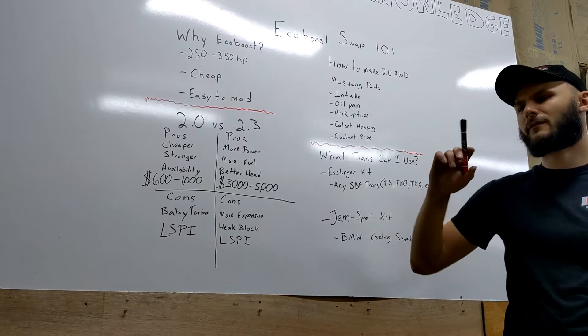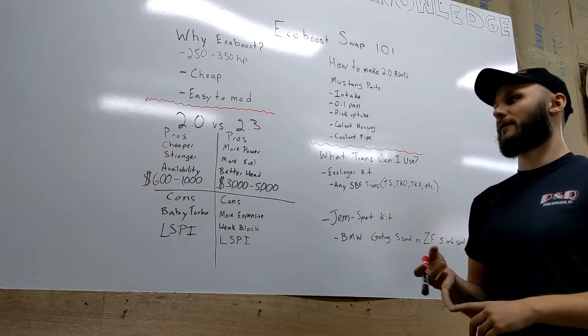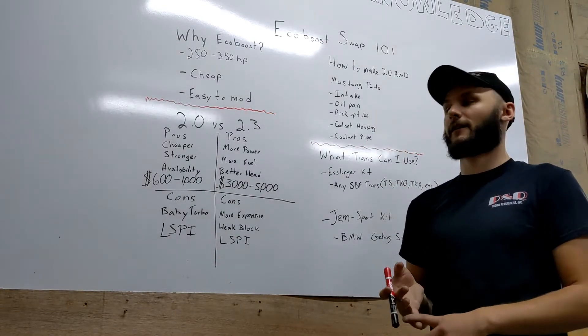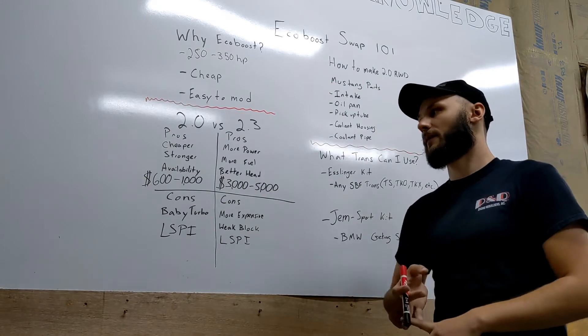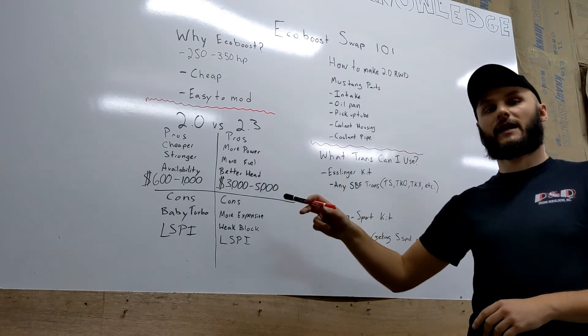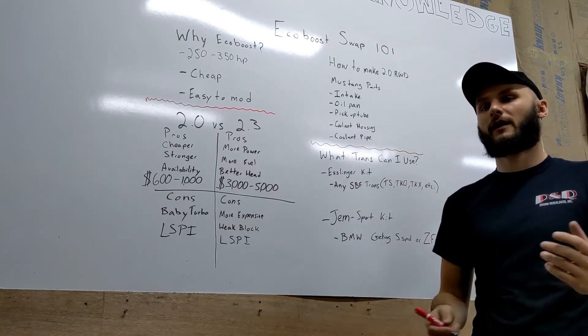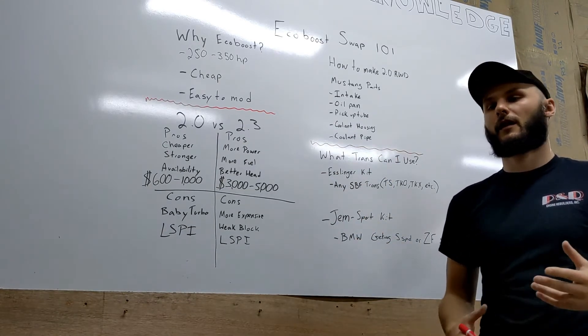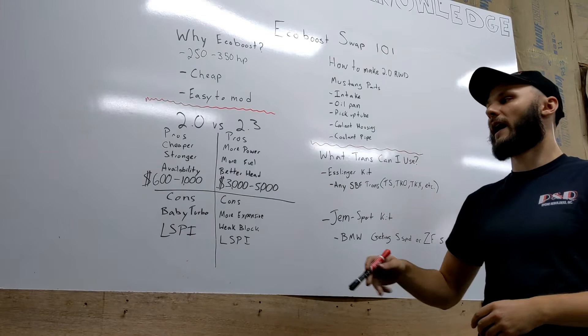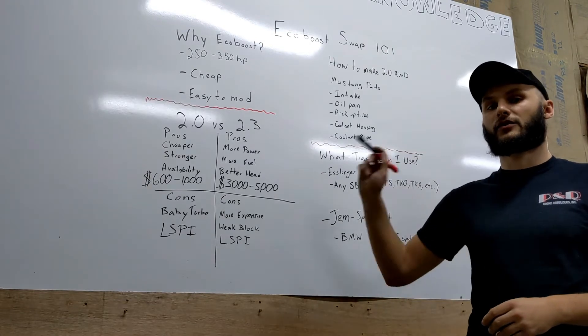Pros of the 2.0: they're cheaper - like I said, you can get them for less than a grand all day long. They're stronger - the 2.0 has a closed deck head or closed deck block where the 2.3 has an open deck block that are inherently weaker. I can go more in depth later on that, but the 2.0 has a stronger block.